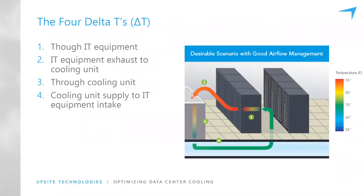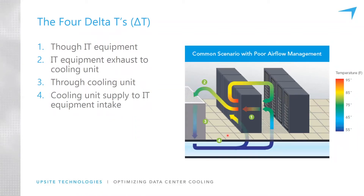You wouldn't think that delta T4 and delta T2 would change very much, and in this example they're drawn at the same temperature. Ideally, air comes out at 75 degrees and the warmest IT equipment intake temperature is maybe 80 to 90 degrees. Air exits IT equipment at 95 or 100 degrees and returns to the cooling units at around 90 to 95 degrees. That is the way we would like to have our facilities.